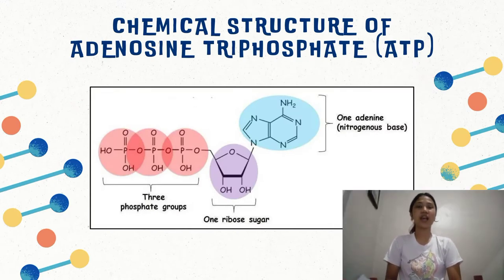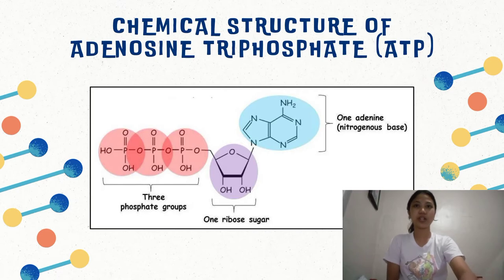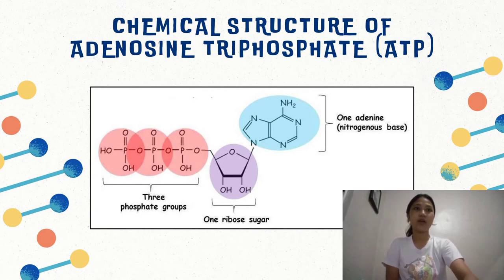This is the chemical structure of adenosine triphosphate or ATP. As you can see on the picture, we have the three phosphate groups, one ribose, and one adenine.